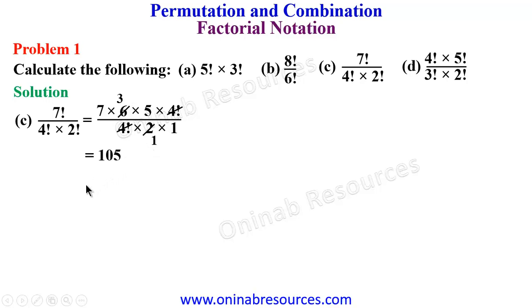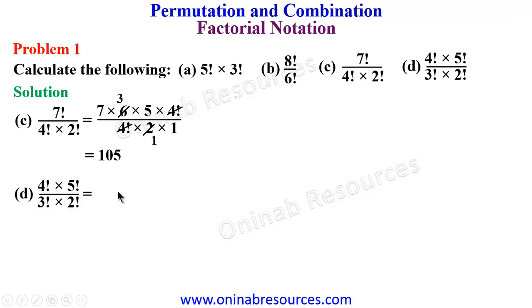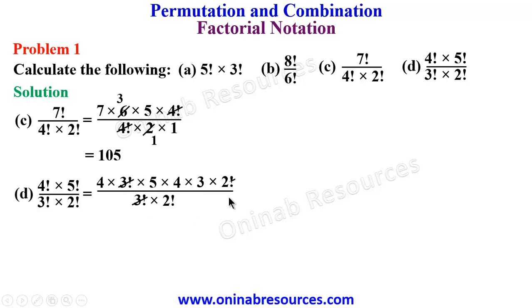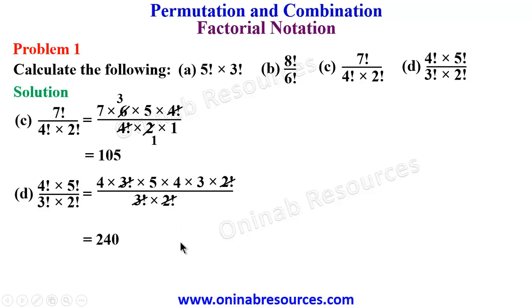For part d, 4 factorial times 5 factorial over 3 factorial times 2 factorial: we expand 4 factorial as 4 times 3 factorial so it cancels with the 3 factorial in the denominator. The 5 factorial is expanded as 5 times 4 times 3 times 2 factorial so it cancels with the 2 factorial in the denominator. We are left with 4 times 5 times 4 times 3, which gives 240.